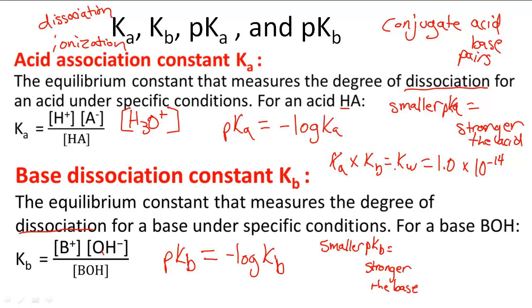If we know Ka, we can find out Kb by using this relationship to find out. Also pKa and pKb are related. pKa plus pKb must equal 14. That's also an important thing to remember.